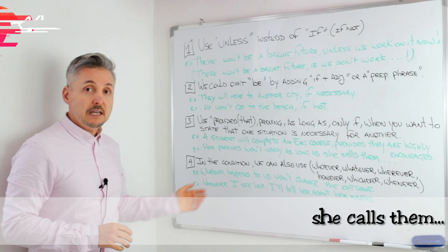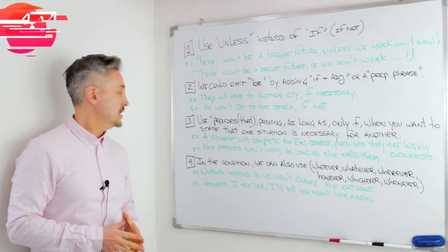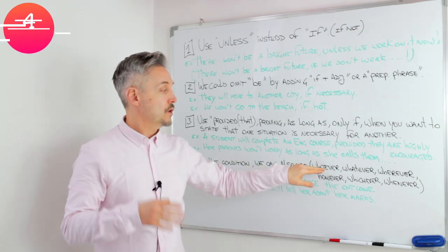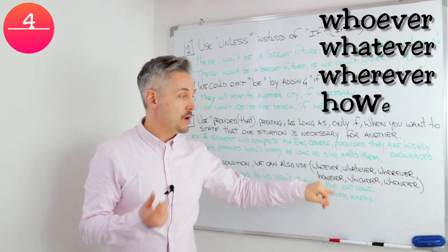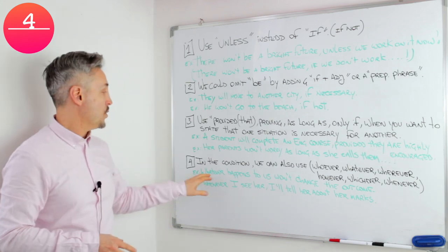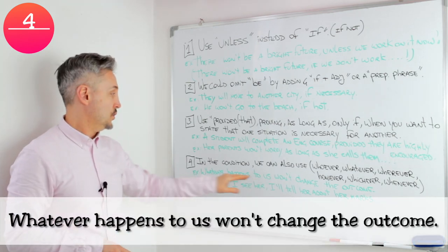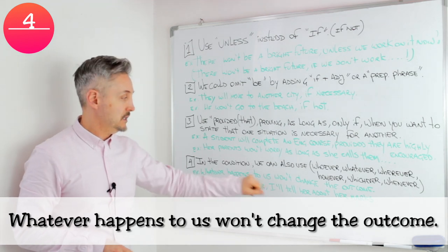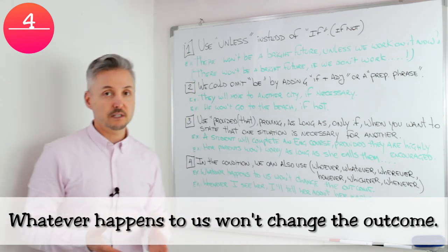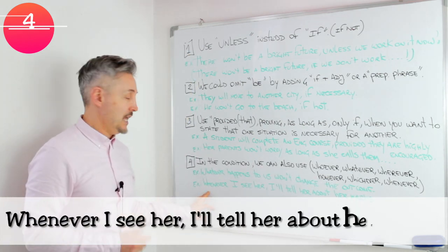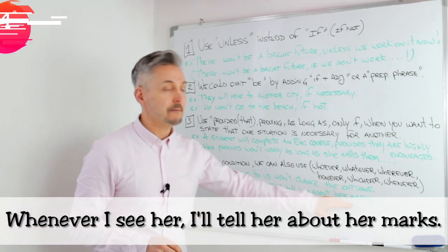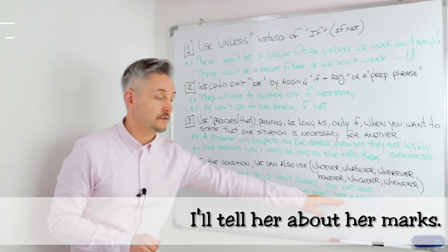The last tip is that in the condition we can also use whoever, whatever, wherever, however, whichever, and whenever. For example: whatever happens to us — this is the condition — won't change the outcome — this is the result. Another example: whenever I see her — the condition — I'll tell her about her marks — the result.